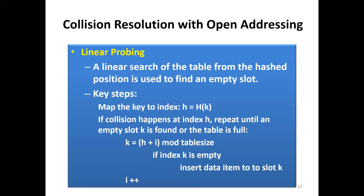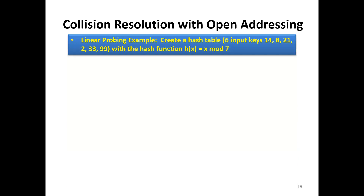Another collision resolution method is open addressing. The first open addressing approach we look at is linear probing. Linear probing makes use of a searching approach to find the next empty slot where the colliding item can be placed. One important formula to note is: new index = (h + i) modulo table size, where i increments from 1, 2, 3, and so on. In our example, we have elements 14, 8, 21, 2, 33, and 99, with modulo 7, giving a table size of 7 indexed from 0 to 6.